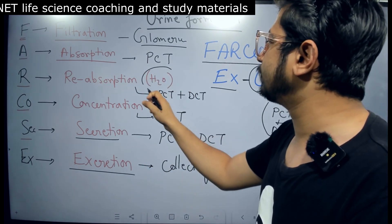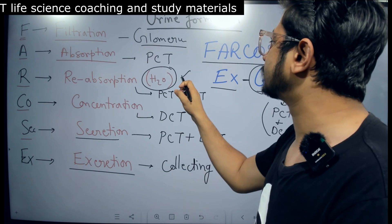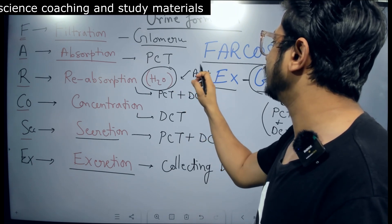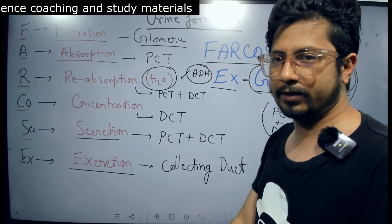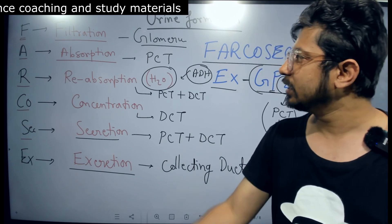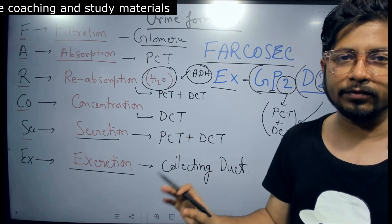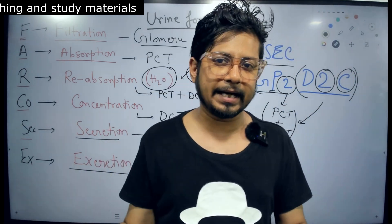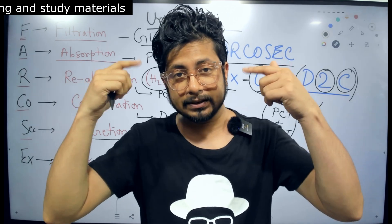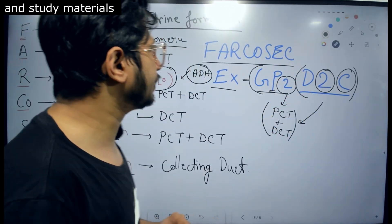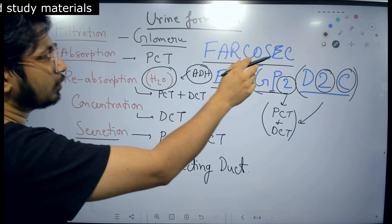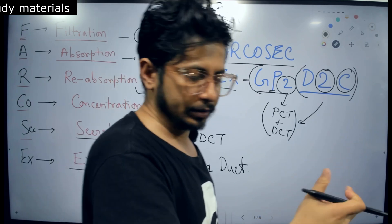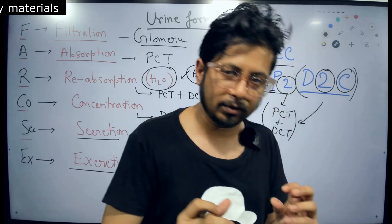And for reabsorption, particularly for water reabsorption, the role of anti-diuretic hormone is very important. So you got this idea of urine formation very clearly. You can remember this for a long duration with FAR-COSEC — example GP2, D2C — this is the particular mnemonic.